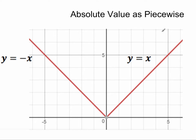Let's talk about absolute values as a piecewise function. Now what does piecewise mean? It means there's more than one piece. That really is what it means.